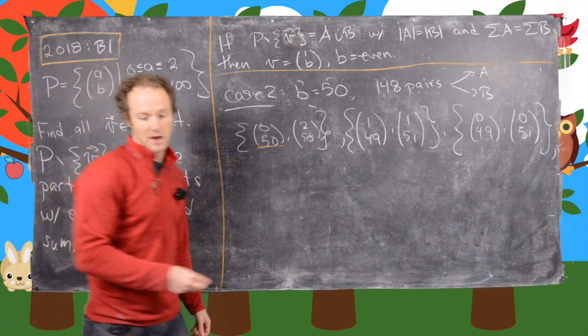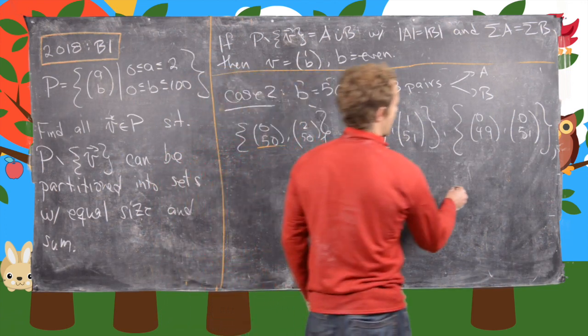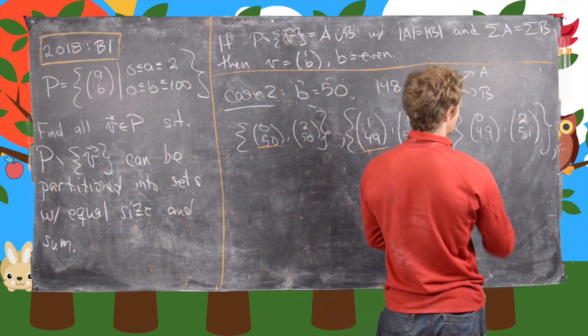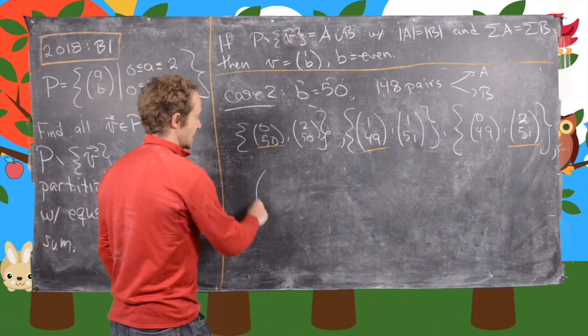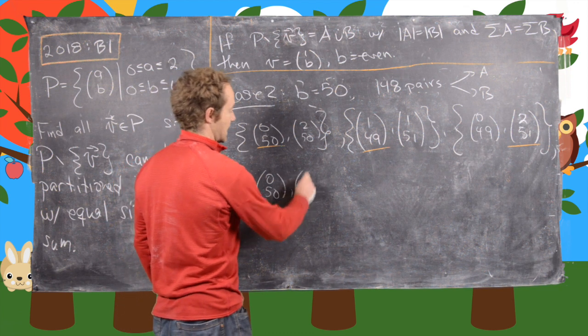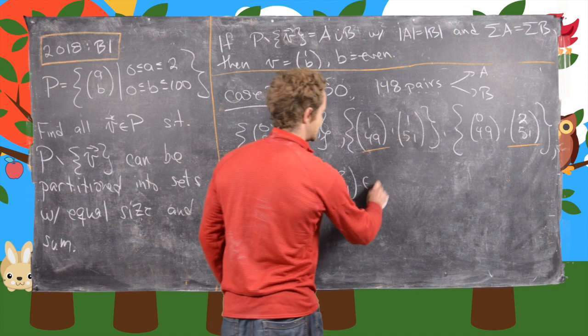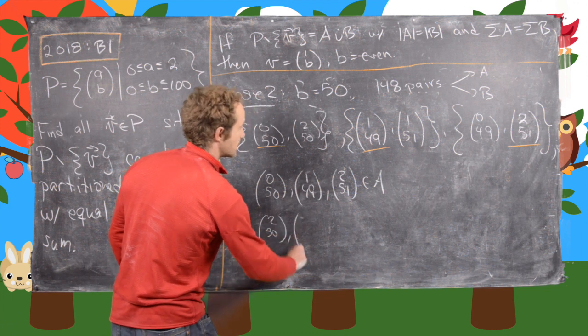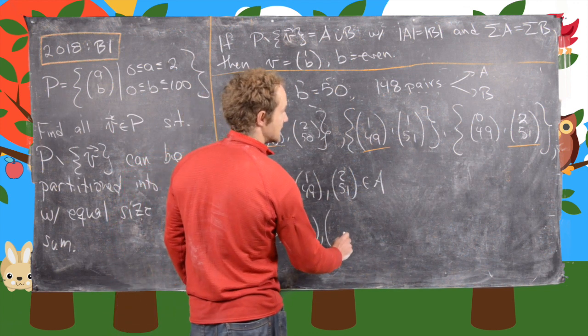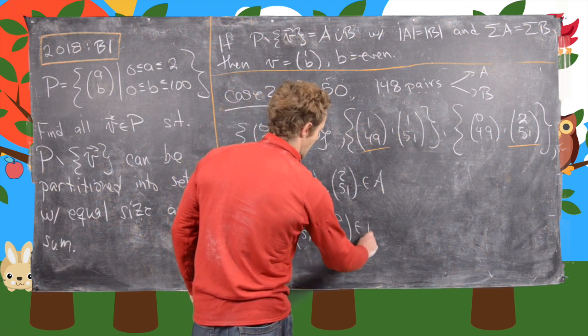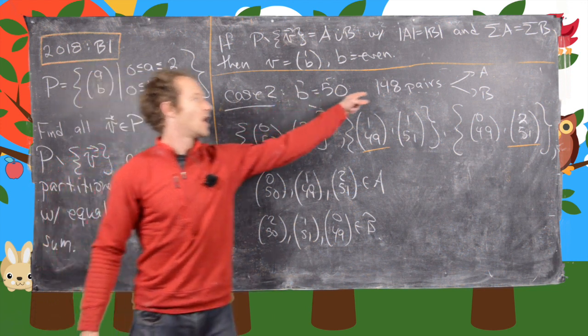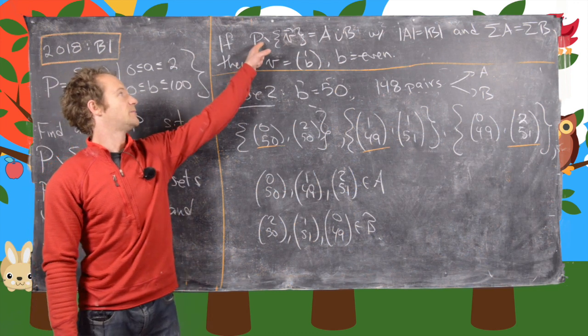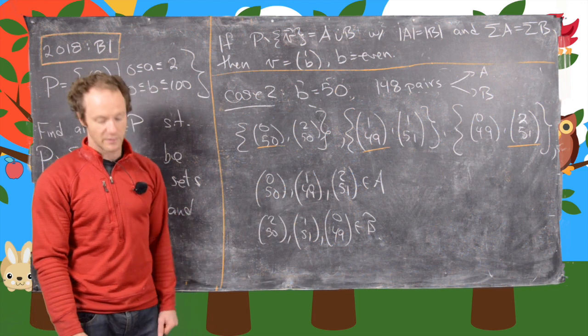So we'll take (0,50), (1,49), and (2,51) and put those in the same set - we'll place them in A - and then we'll take the other three and place them in B. In other words, (2,50), (1,51), and (0,49) are going to go in B. So again, after this 148 pairs step, A and B have the same sum, but we haven't used up all of the set that is P minus V, but after this step we have and we've maintained the same sum. That's the end of this video.